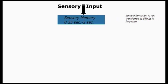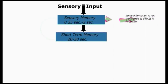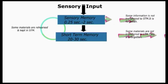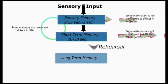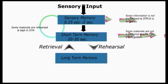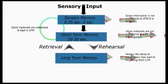Some of these inputs are attended and rehearsed; such inputs pass on to short-term memory. Unattended inputs are not transferred to short-term memory and are forgotten. Inputs can be held in short-term memory for 20 to 30 seconds. If they are further rehearsed, they pass on to long-term memory; the unrehearsed ones are forgotten. Inputs moving to long-term memory are organized into categories and may remain there for days, months, or even lifelong, and can be retrieved as needed. Decay and interference are some factors that lead to loss of information from long-term storage.